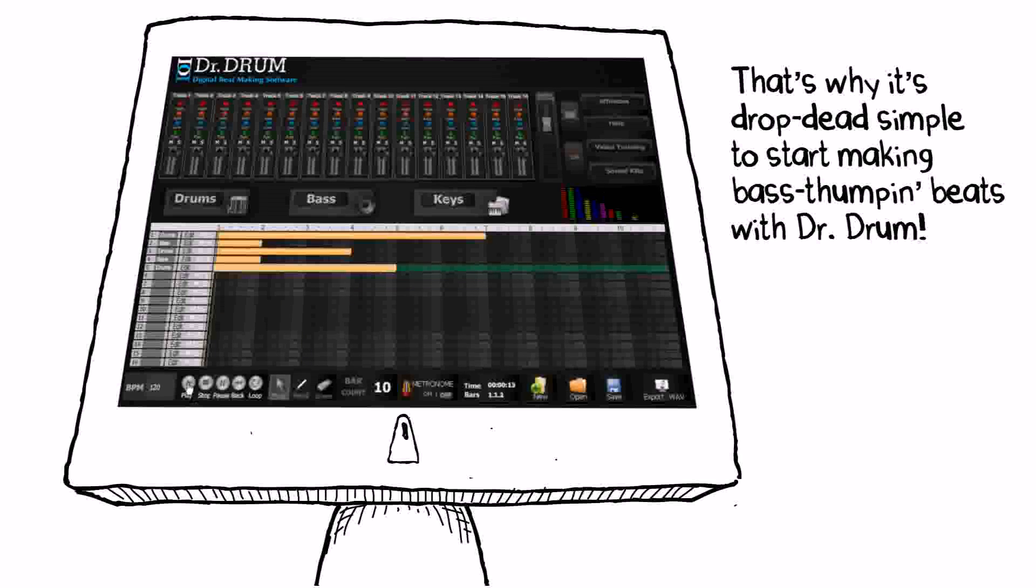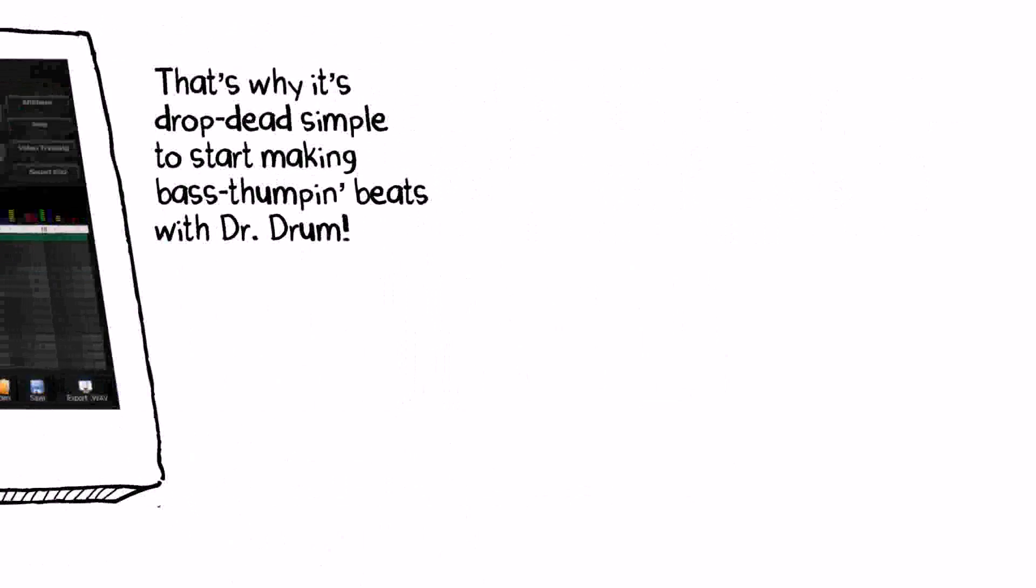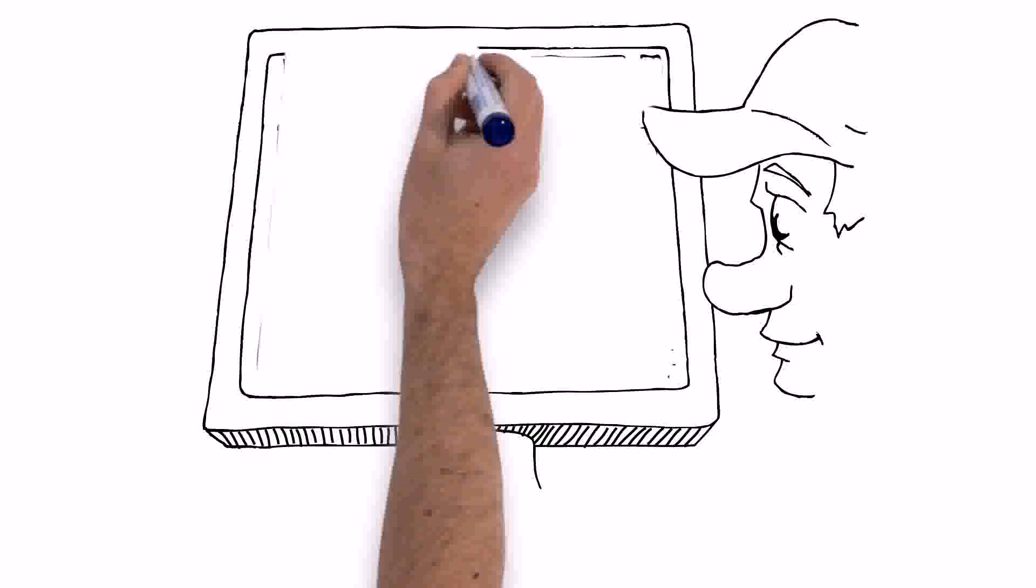Copy bars or multiple bars with two clicks. Tweak each track's volume, low tones, mid-tones, high tones, and pan settings individually until you get the perfect sound. Mute tracks or play them solo to fine-tune that beat. It really is that easy.